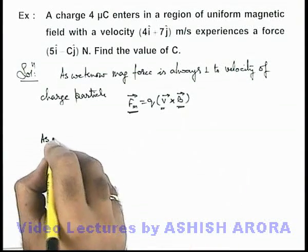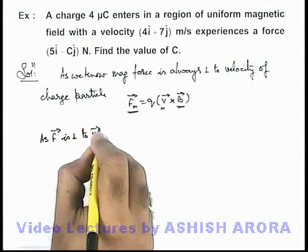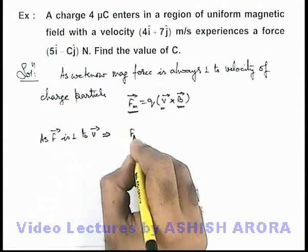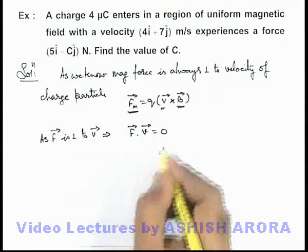So we can write as F vector is perpendicular to v vector. This implies the dot product of the force vector and the velocity vector must be equal to zero.